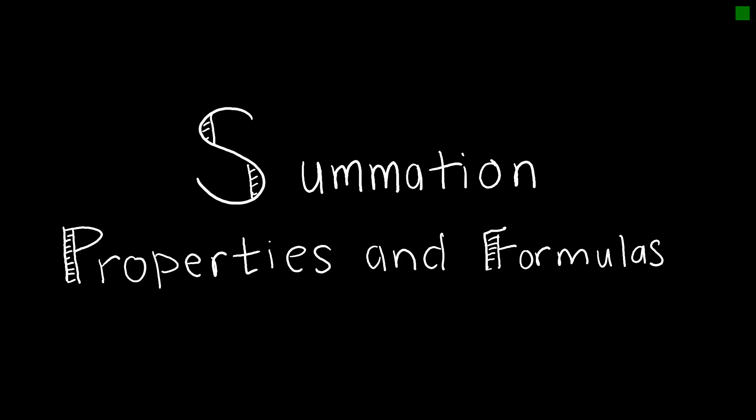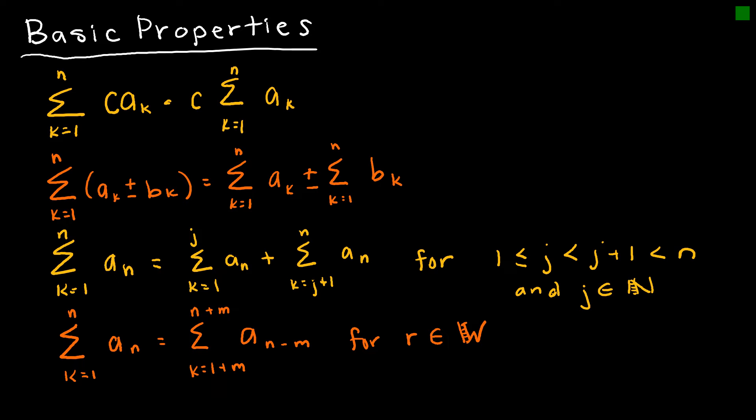Now that we are familiar with sigma notation, I want to take a look at some summation properties and formulas. Our first property essentially tells me that if I have a constant being multiplied by the values of a series, it's okay to pop that constant to the outside, determine what the sum of the series is, and then multiply by that constant at the end.